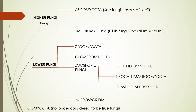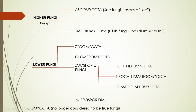Then we have the lower fungi, which don't have septate hyphae and are generally less well known: the Zygomycota, the Glomeromycota (arbuscular mycorrhizals), the zoosporic fungi now split into three groups — the Chytridiomycota, the Neocallimastigomycota, and the Blastocladiomycota — and then the Microsporidia, once known as protozoans but now through molecular work known to be fungi that have lost the ability to live outside a cell, making them intracellular parasites. And of course, we have the Oomycota.